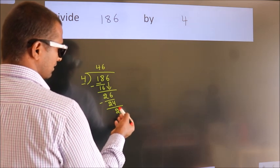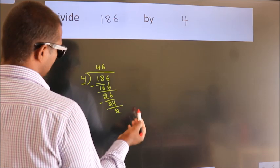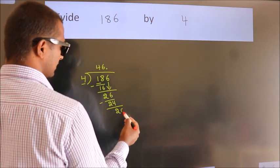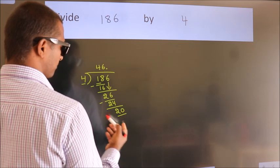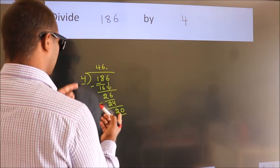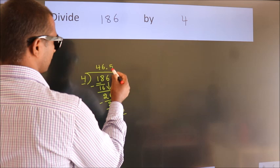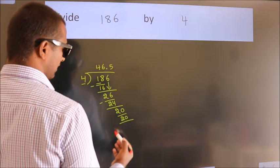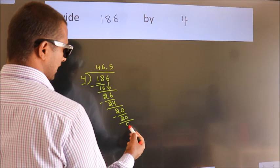After this, no more numbers to bring it down. So what we do is, we put dot, take 0. So, 20. When do we get 20 in 4 table? 4 fives, 20. Now we subtract. We get 0.